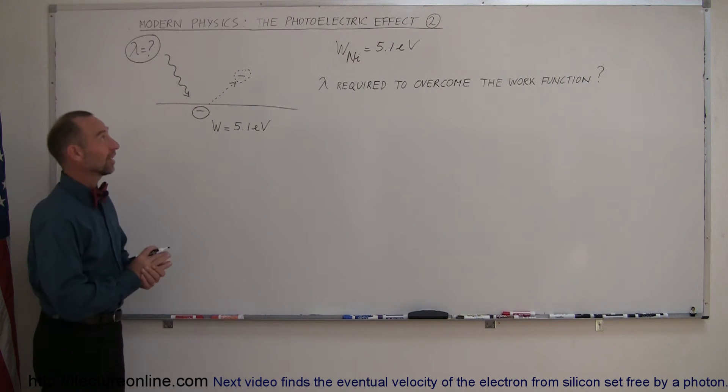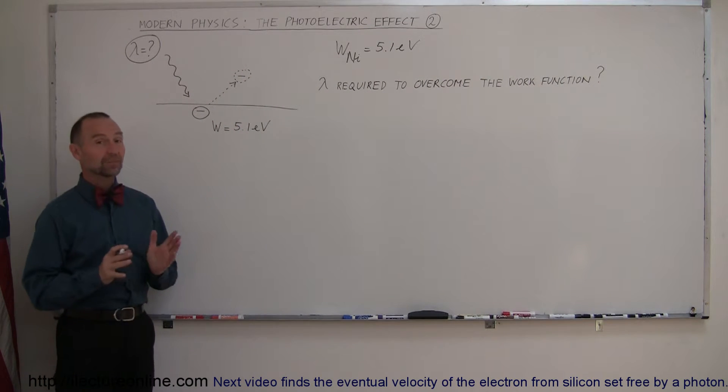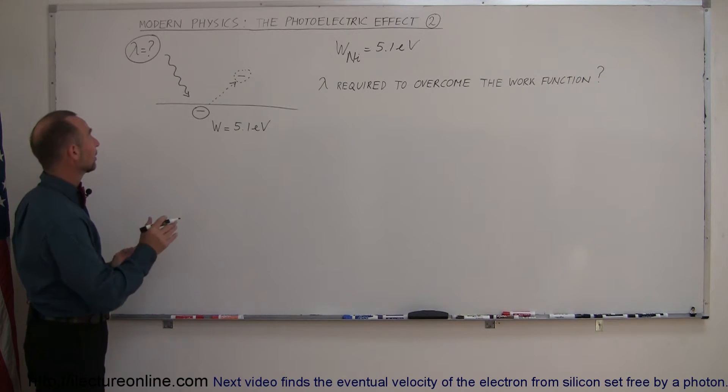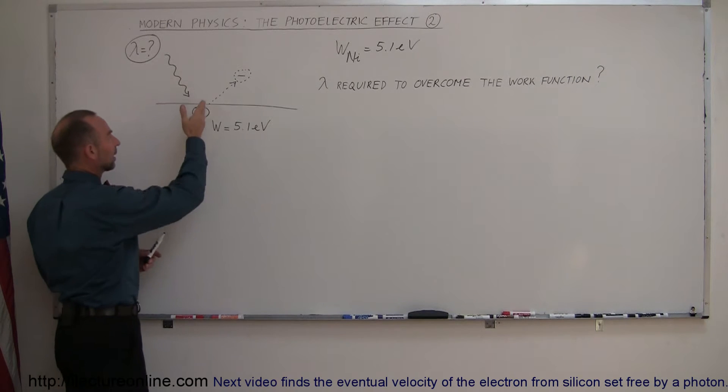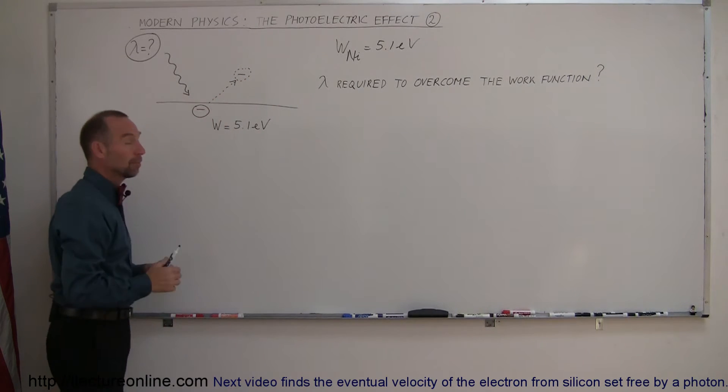Our next example in modern physics is again the photoelectric effect, but here the question is a little bit different. Here they want to know the wavelength of the incoming photon required in order to set an electron free in this particular metal. In this case,